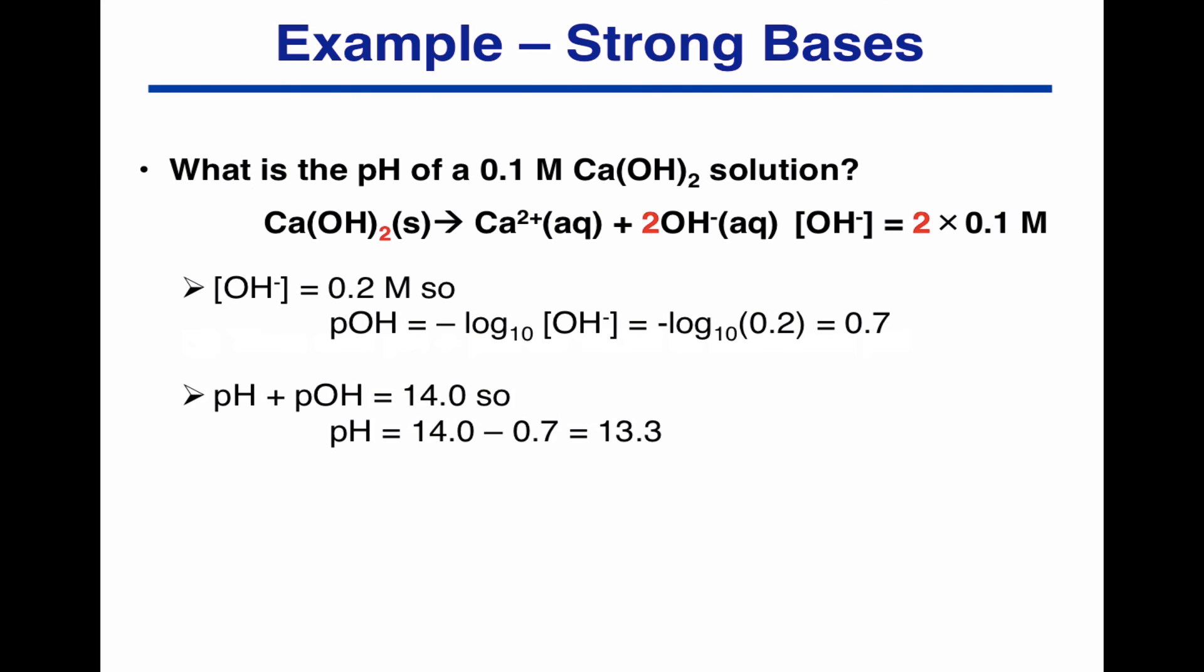And the pH plus the pOH is equal to 14. So the pH is 14 minus 0.7, which is 13.3. And that's it.